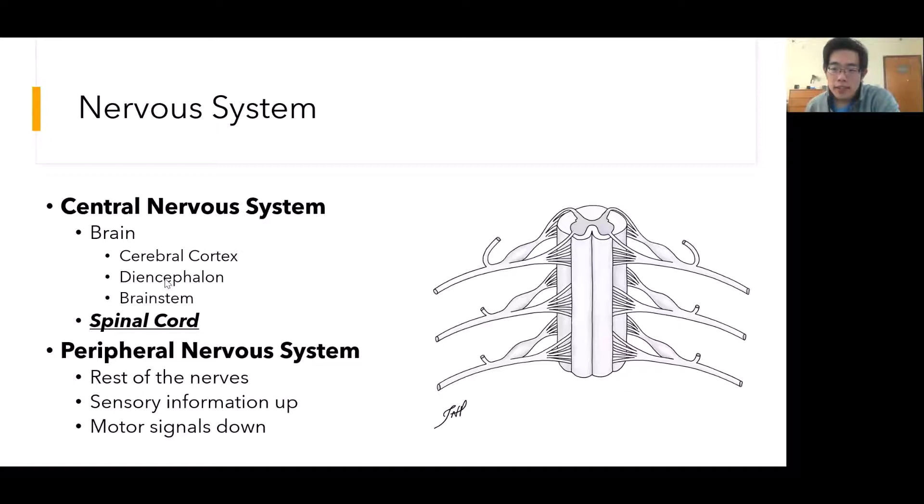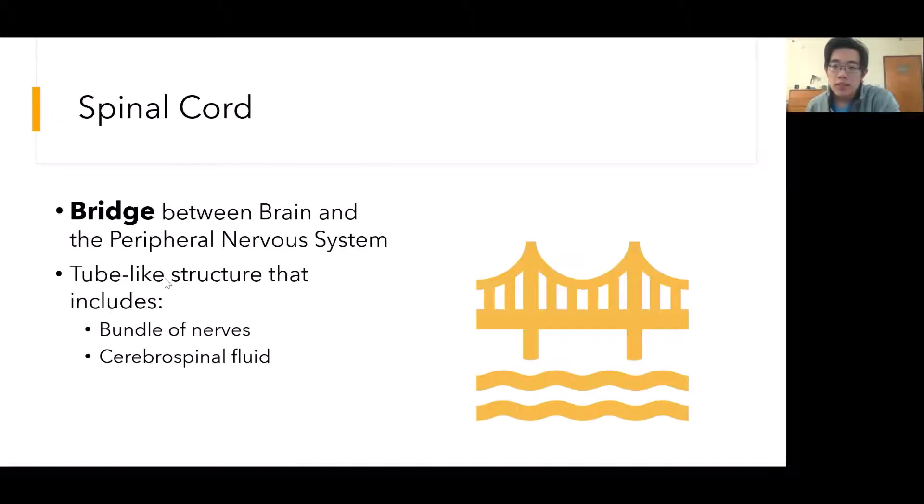The rest of our nervous system falls under the peripheral nervous system. We have a lot of other nerves that innervate our arms, legs, stomach, and the rest of our body. These nerves send sensory information up to the brain, and they also send motor signals down to our muscles. The brain is the primary command center, the decision maker, while the peripheral nervous system is like a highway that carries information to and from the external world.